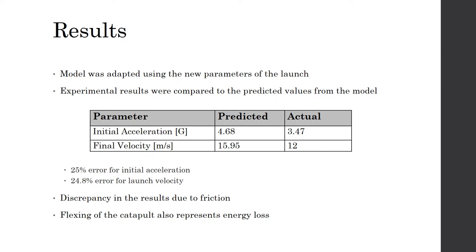This discrepancy in the results is due to friction as well as the flexing of the catapult, which represents an energy loss due to an imperfect load transfer from the bungees to the cradle.